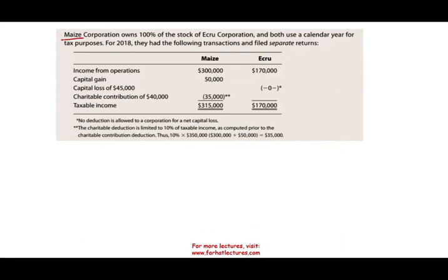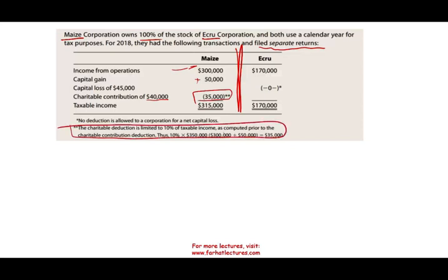May's owns 100% of eCrew Corporation, and both have a calendar year for tax purposes. For 2018, filing a separate return: May's has income from operations of $300,000 and a capital gain of $50,000. They have a charitable contribution of $40,000, of which they can only take $35,000. Why? Because there is a 10% limit on taxable income — 300,000 plus 50,000 is $350,000 times 10% allows only $35,000. That means they have a $5,000 carryover. So May's taxable income is $315,000.